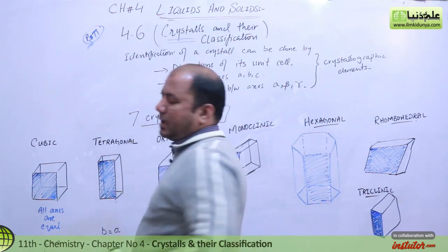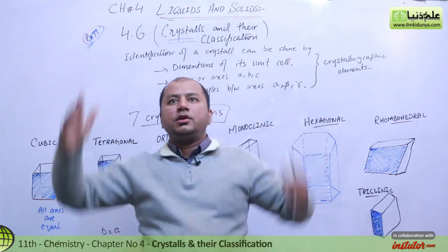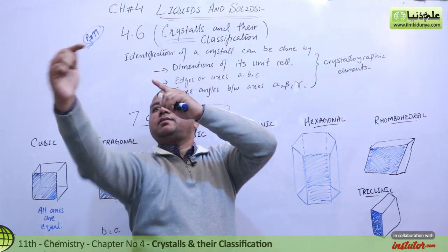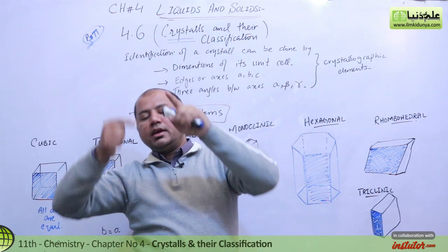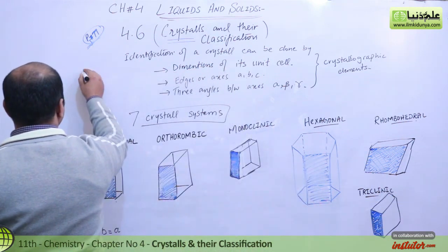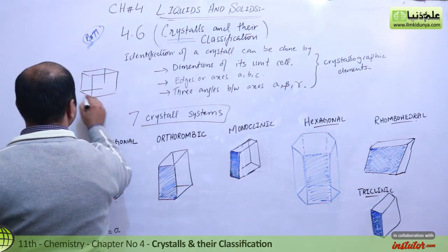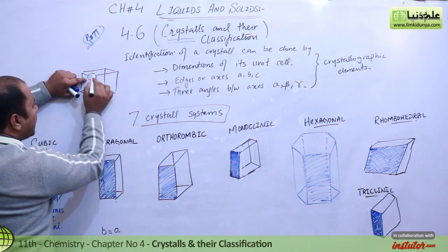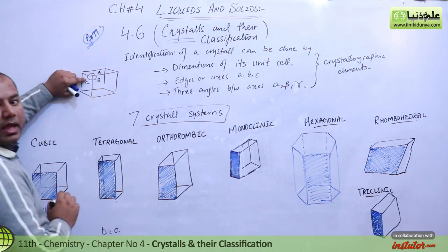The angles between axes A, B, and C are alpha, beta, and gamma — these are the interior angles. If you just think about a room, it is 3D. You can see: this is alpha angle, this is beta, and this is gamma angle. Alpha, beta, gamma — it depends on which axis you are considering: A, B, or C.